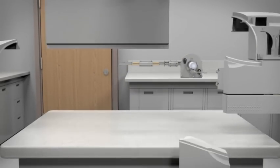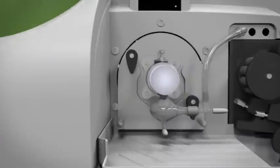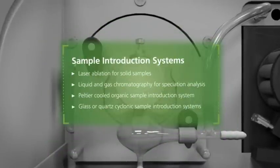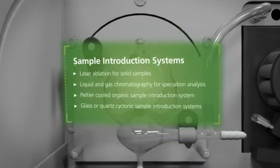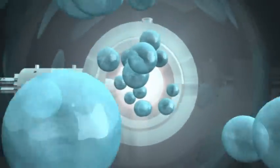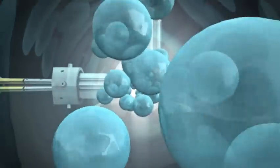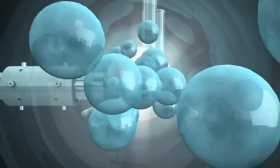One thing you'll notice at first glance is the large, open sample introduction area on Nexion. This design enables the instrument to accept a wide variety of sample introduction systems that can be quickly and easily switched out to suit a particular application. Once your sample is introduced and has been converted into a fine aerosol in the spray chamber, it passes into the torch and through the argon plasma.